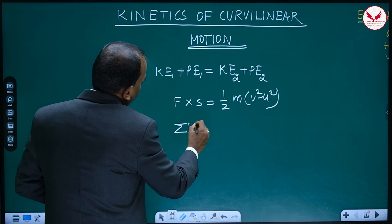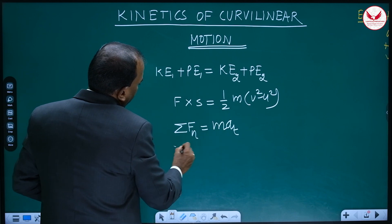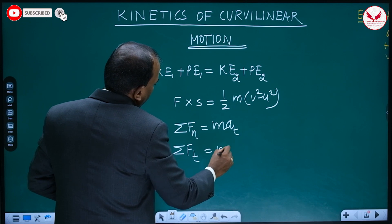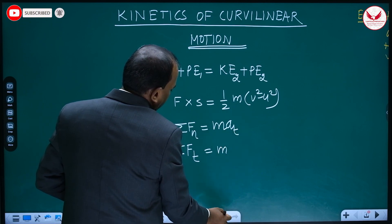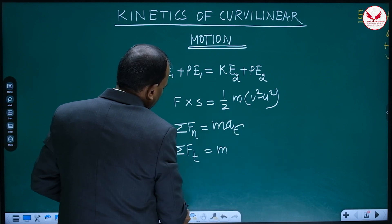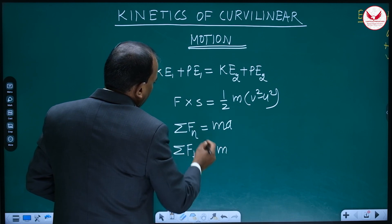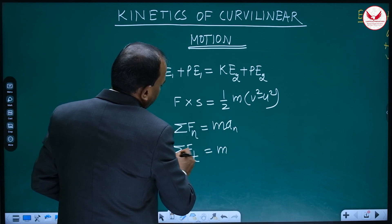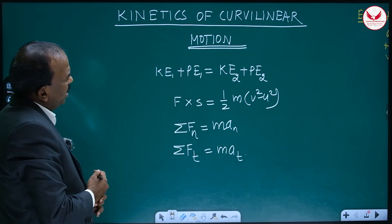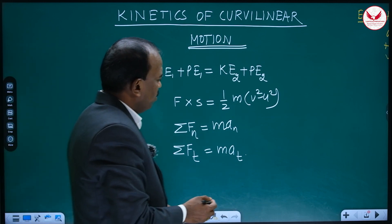We can also use Newton's second law with normal and tangential components: Fn equals M·An and Ft equals M·At. Using such simple formulas, we can solve examples of kinetics of curvilinear motion.